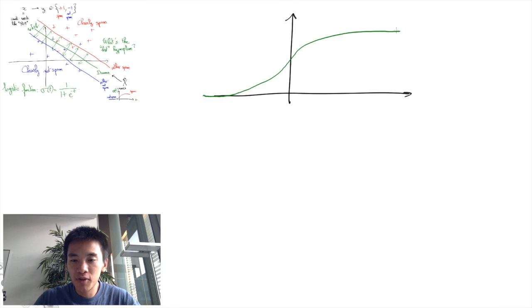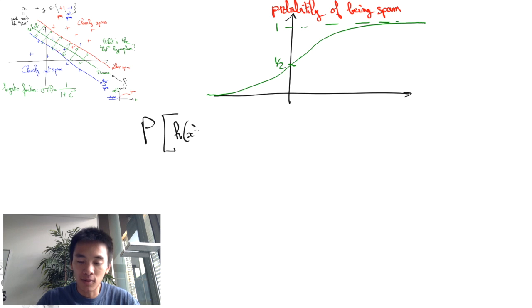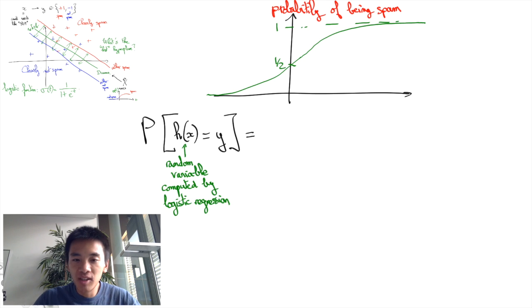More rigorously, if we interpret h as the random variable that's the random prediction of the logistic regression, we see that according to this logistic regression, the probability that h of x is equal to y is going to be sigma of y times w transpose x plus b.